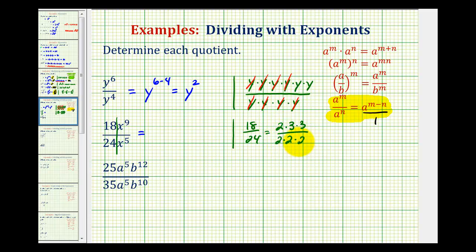24 would be four times six. Well there's four, and there's six. And now we can see the common factors of two and three, leaving us with three-fourths. So here we have three over four.